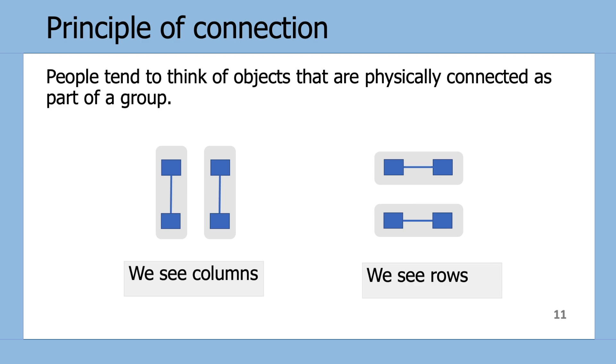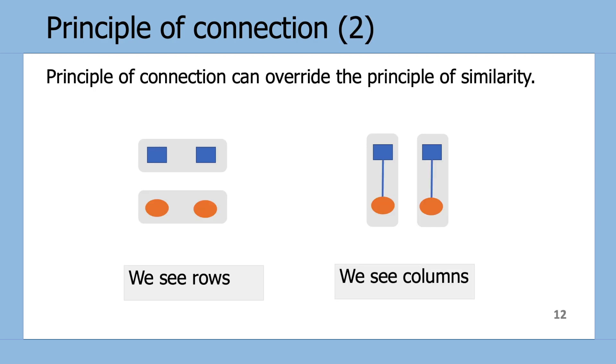All right, so the last principle that we'll cover today is the Principle of Connection, and this is where people think of objects that are physically connected as belonging to the same group. So on the left-hand side, brains perceive the vertical connection between the shapes as columns, and on the right-hand side, brains perceive the horizontal connection between the shapes as rows. Now this principle also overrides the Principle of Similarity.